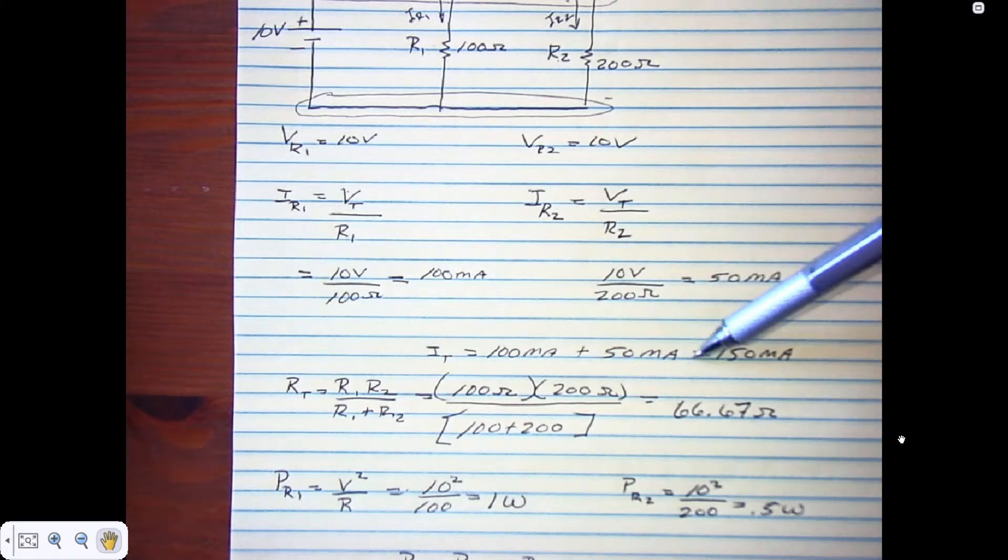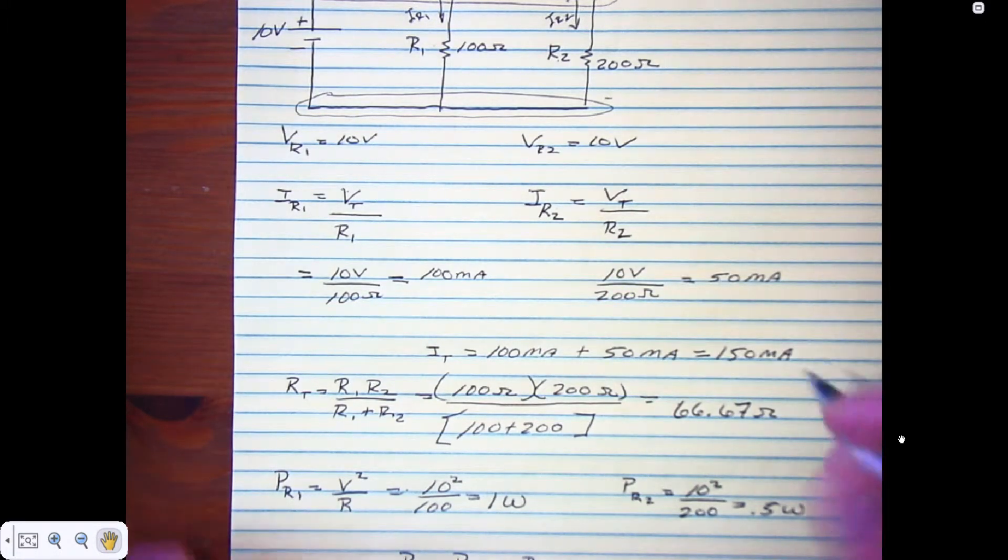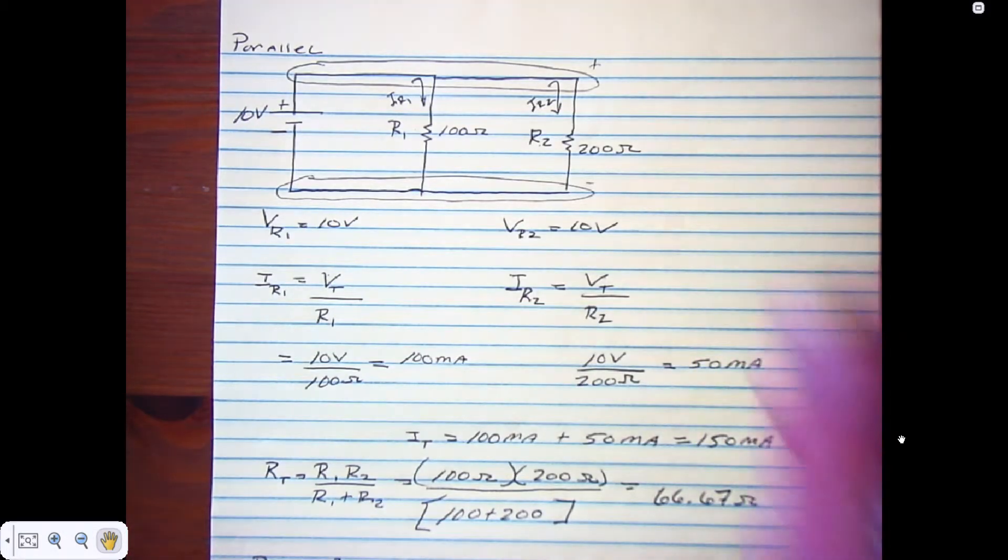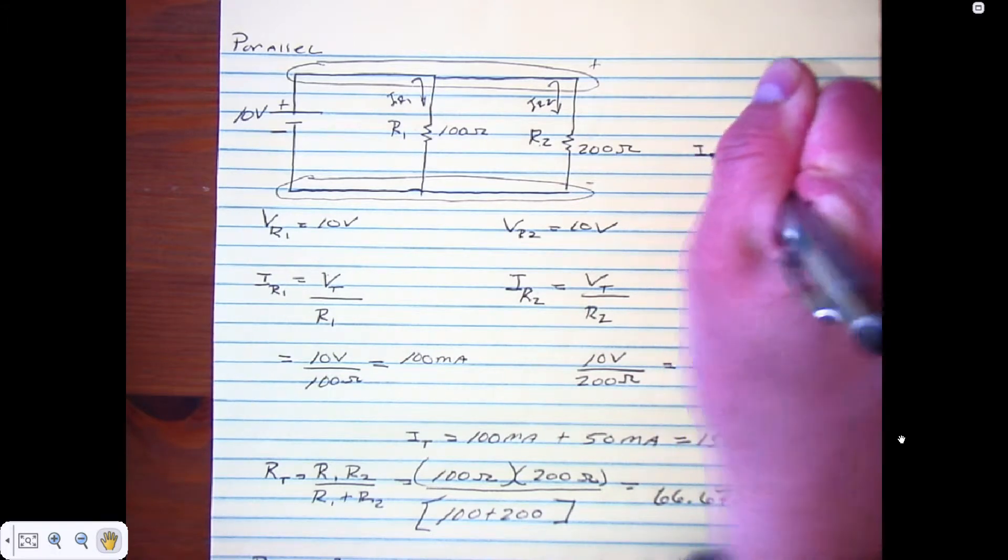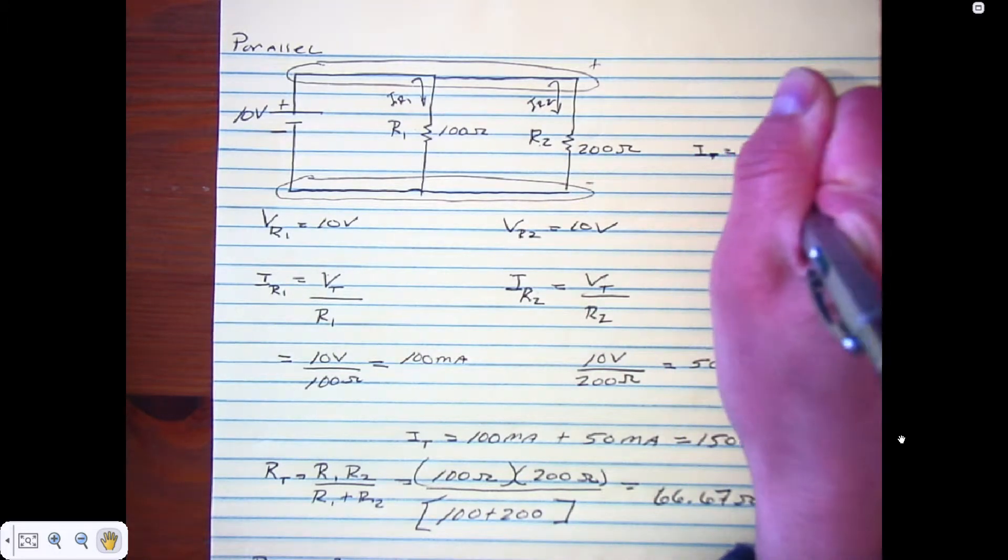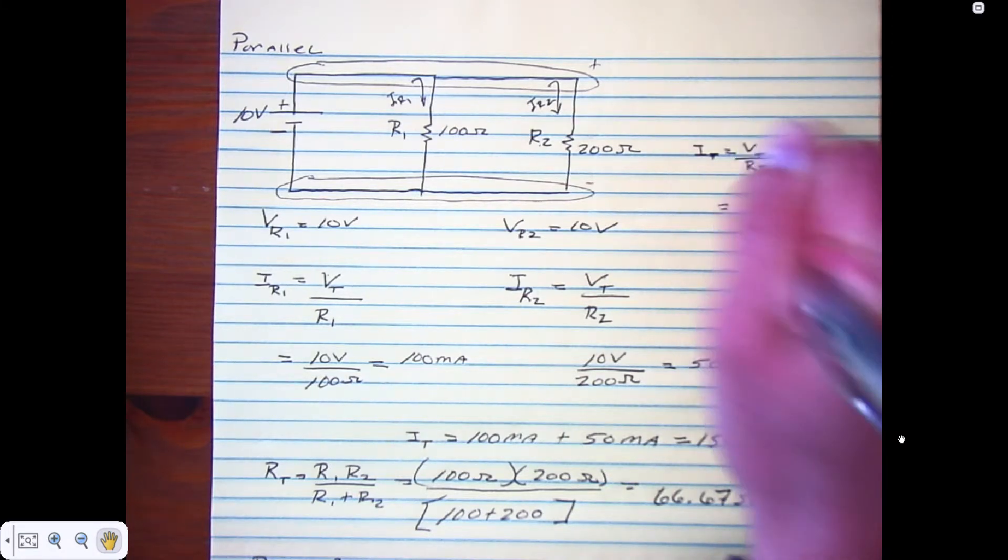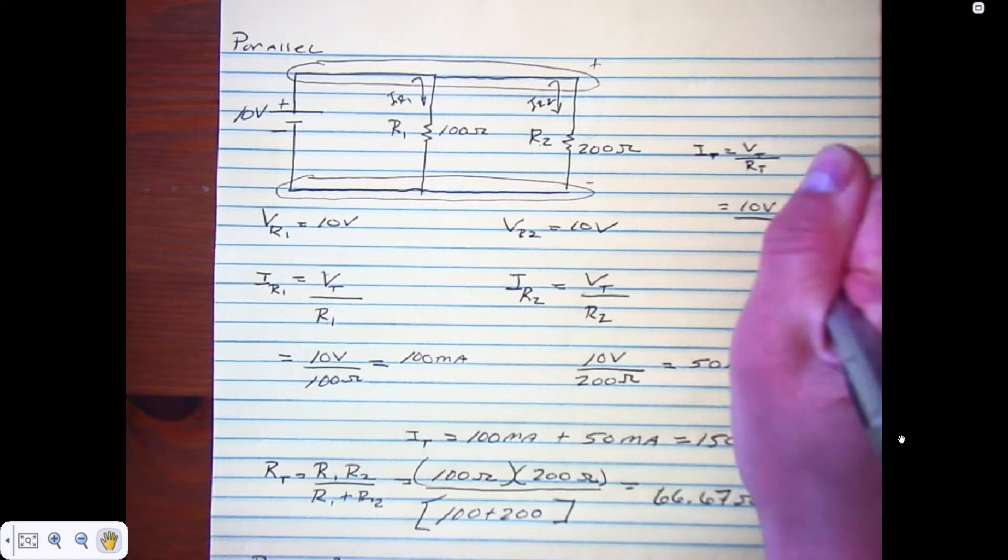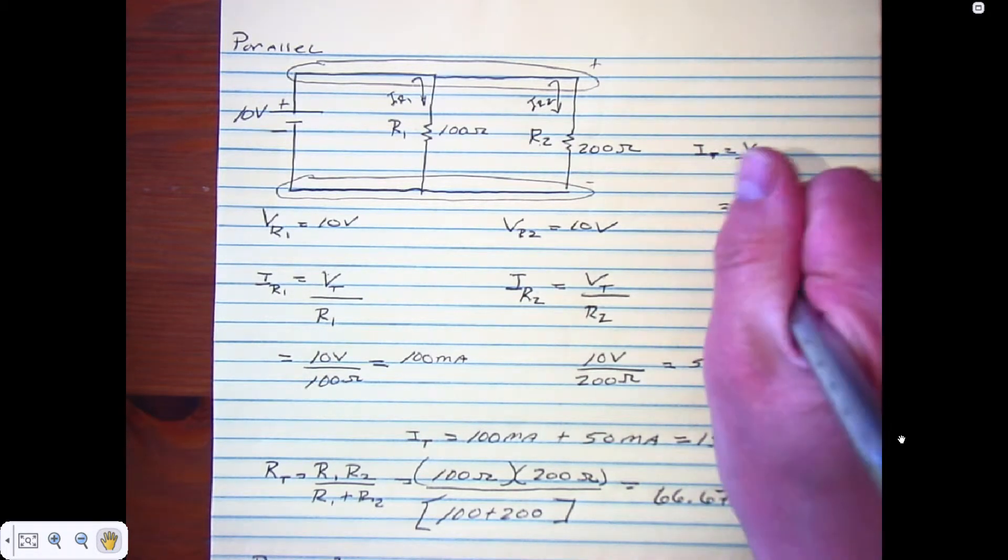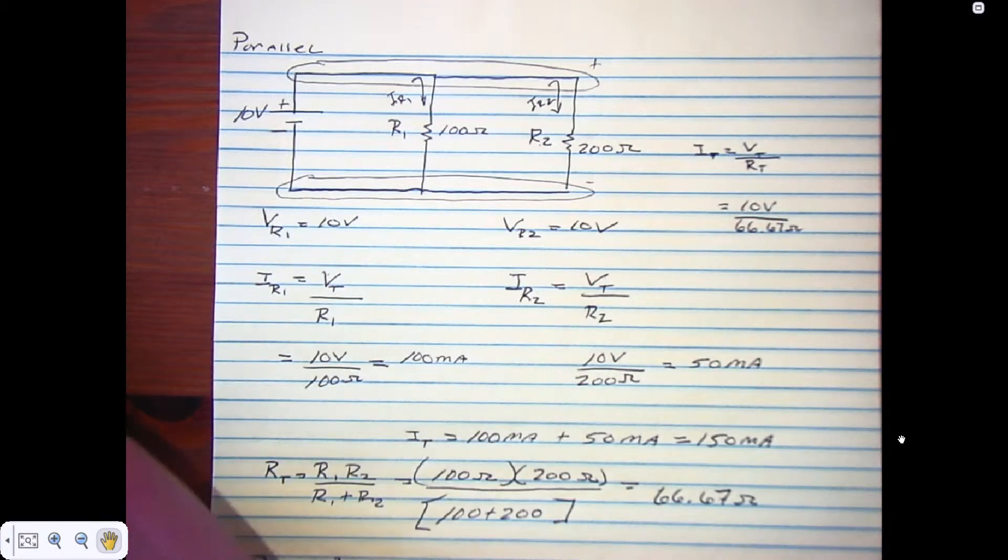You're probably saying, is there a way to check if my current is correct? Since we add these two, sure we can do that. I'm going to put it up here as a check. I can say I total equals voltage total over resistance total.